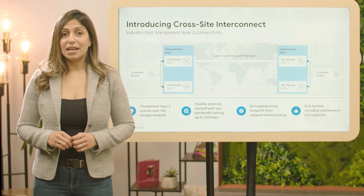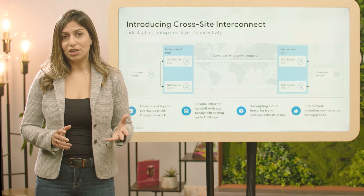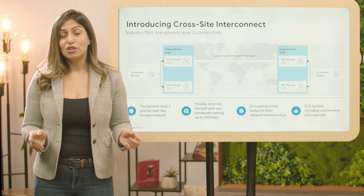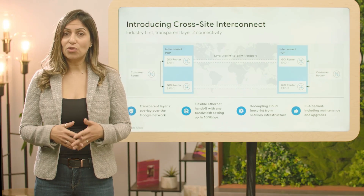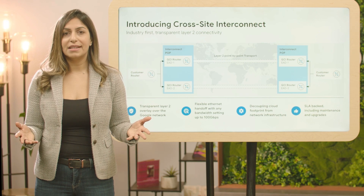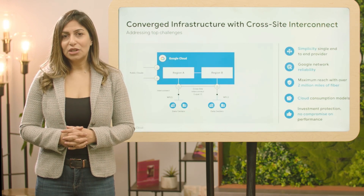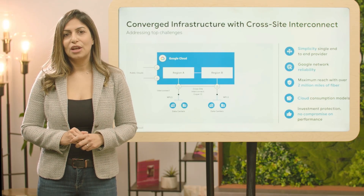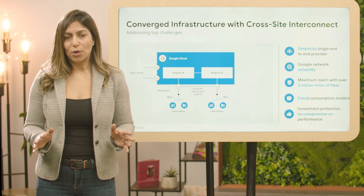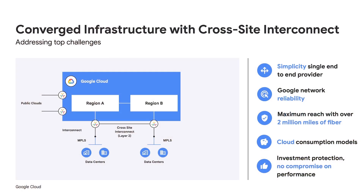Cross-Site Interconnect is also SLA-backed, providing reliability guarantees even under failure conditions, planned or unplanned maintenance events. You can offload the overhead of planning, detecting, and routing around failures, and instead leverage network reliability as a service. Cross-Site Interconnect addresses top high-performance connectivity challenges, providing the simplicity of dealing with a single global network provider for any connectivity need. Network reliability matches that of Google's own applications leveraged by billions of users worldwide. Maximum reach with over 2 million miles of terrestrial and subsea cables, all delivered through the cloud, where hundreds of gigabits per second of bandwidth can be scaled up or down with a single API call — all without compromising on performance or costs.